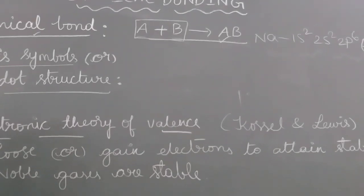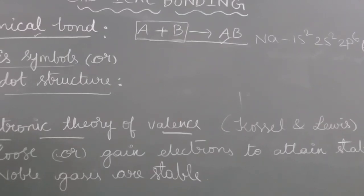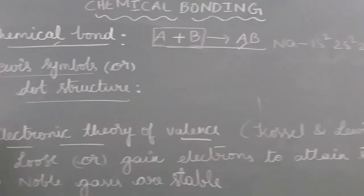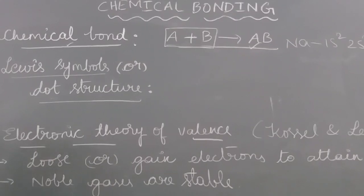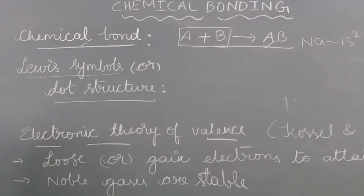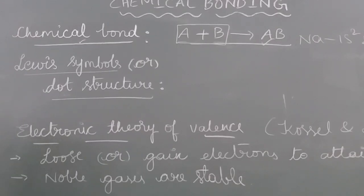Next we are learning about Lewis symbols or dot structures. Lewis proposed a structure for atoms and showed the outermost electrons or valence electrons with dots or cross marks.